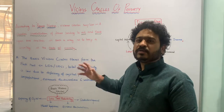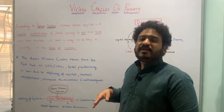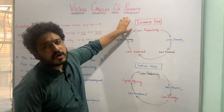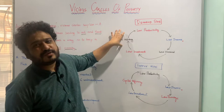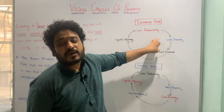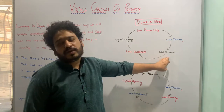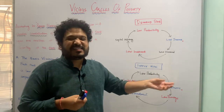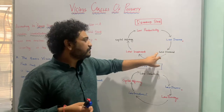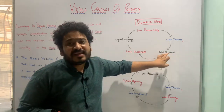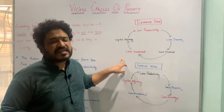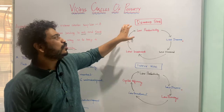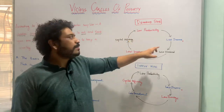These vicious circles are operating on both the demand side as well as the supply side. On the demand side, the circular constellation of forces starts because of low real income. Low real income translates into low demand, and as a result of low demand it reflects into lowering of investments, leading to capital deficiency in the market, which results in low productivity.